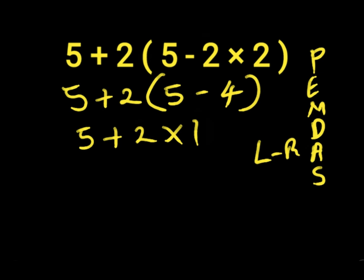Here we have addition and multiplication. We solve the multiplication first because it comes before addition. 2 times 1 gives us 2. Then 5 plus 2 gives us 7. So 7 is the correct answer to this expression.